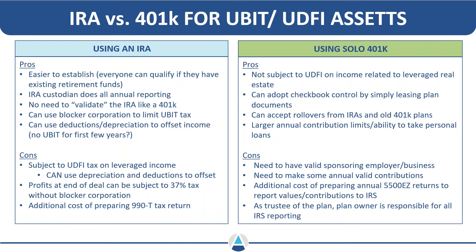Some cons of IRAs: they can be subject to UDFI on tax-leveraged income, though depreciation and tax deductions can offset profits. At the end of a deal, you can potentially face up to 37% tax if not using a blocker corporation or without appreciable deductions to offset liabilities. There's also the additional cost of preparing and filing a 990-T tax return. The IRA offers a direct route for many people to get started with tax-exempt investing, but it lacks the easy exemption from debt-financed income tax that solo 401ks provide.